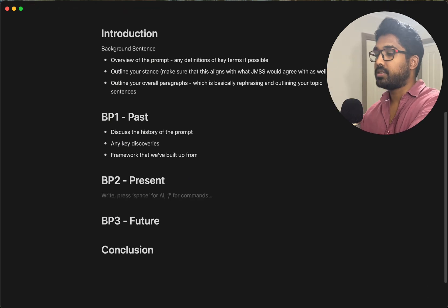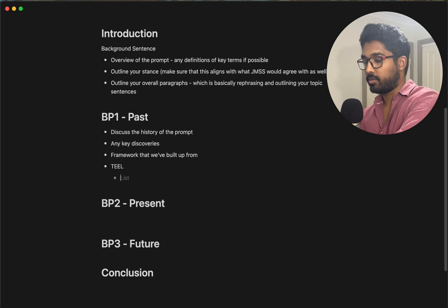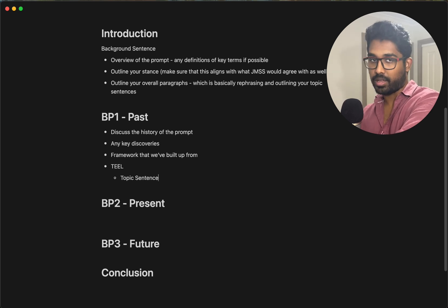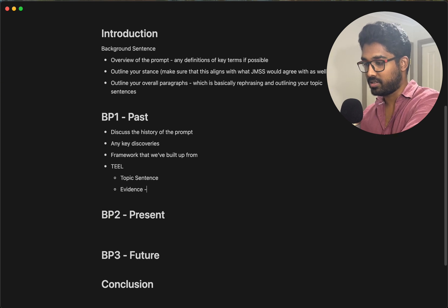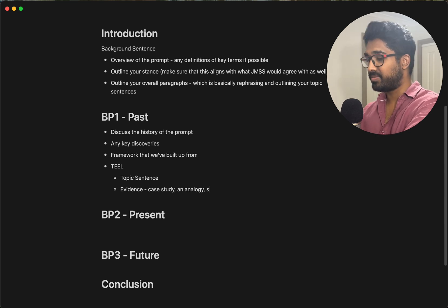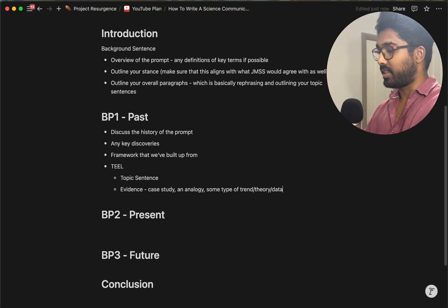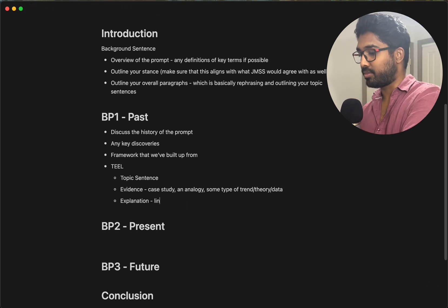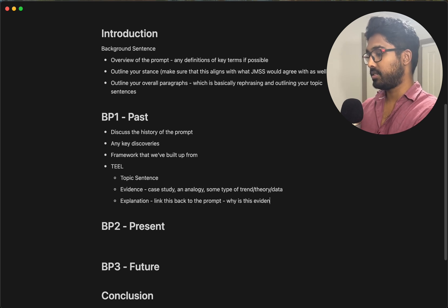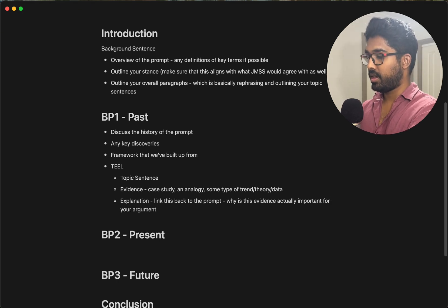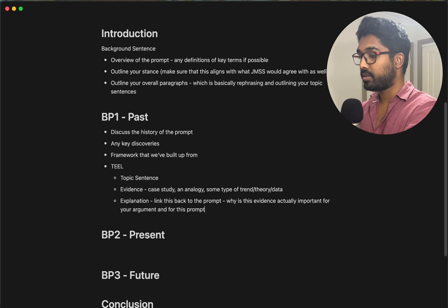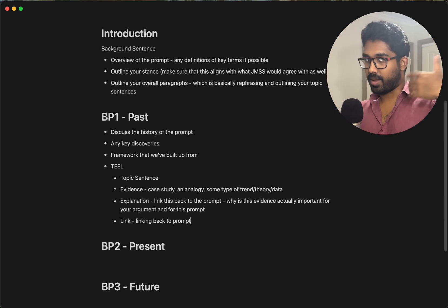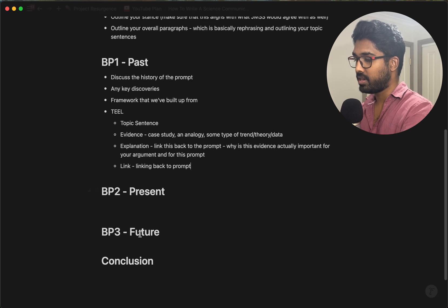That's BP1, the past. The structure you use is just your normal TEAL framework: T stands for topic sentence, outlining what you're going to talk about in your paragraph. E stands for evidence — a case study, analogy, trend, theory, or data. A stands for explanation — really link it back to the prompt and explain why this evidence is important for your argument. L is the linking sentence, linking back to the prompt one more time. You always want to be linking back to the prompt. Copy-paste that for every single paragraph and you're done.